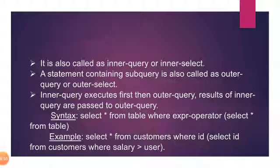For example: SELECT * FROM customers WHERE id IN (SELECT id FROM customers WHERE salary > 10000). First the inner query executes — SELECT id FROM customers WHERE salary greater than 10000 — whoever has a salary above 10000, their ID is returned. Suppose the output is ID 201. That 201 is passed to the outer query: SELECT * FROM customers WHERE id = 201. Based on that, all the customer details for ID 201 are printed. This is the subquery.